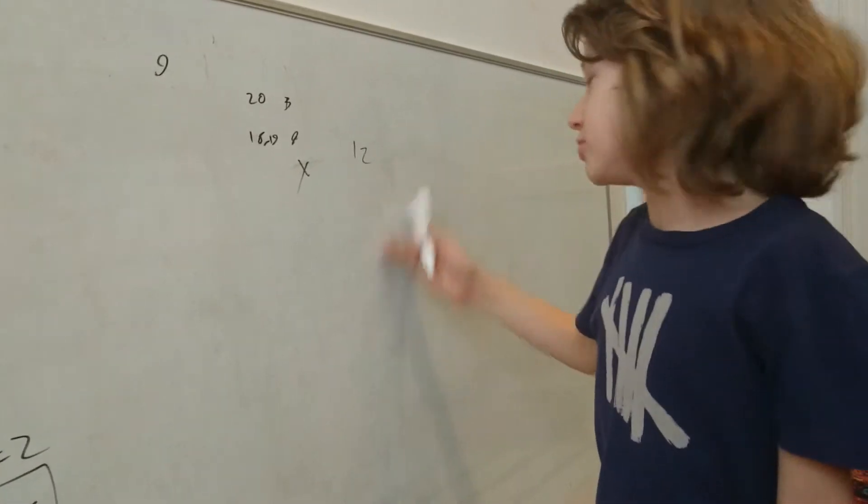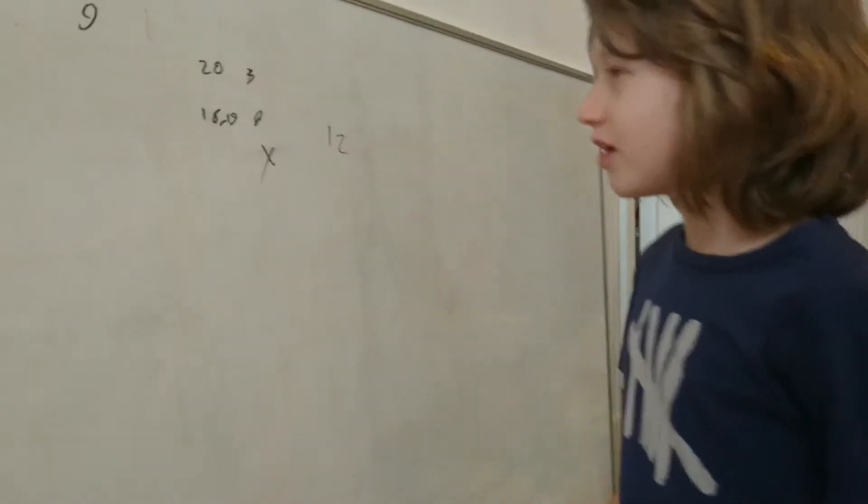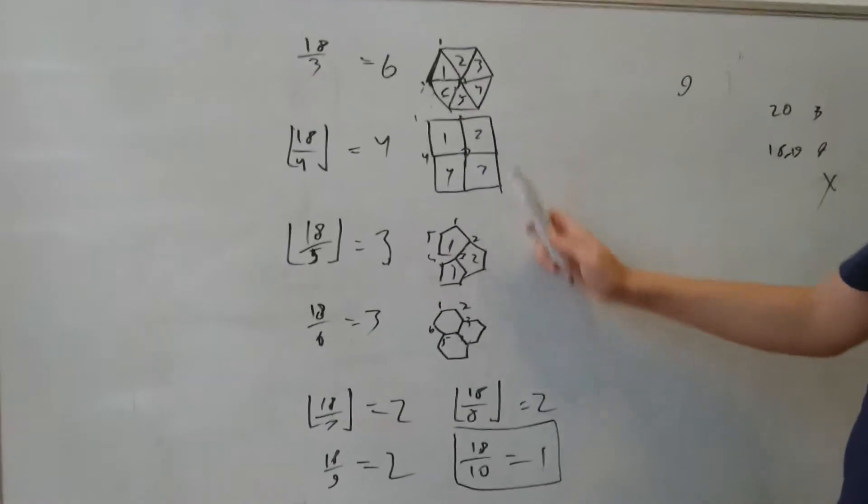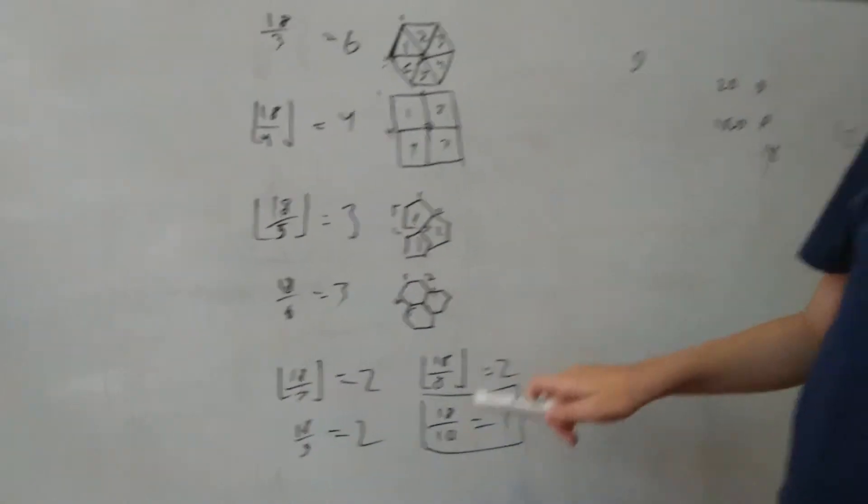Another arbitrary number pops up. Okay. So. Right? Six. Yeah. Fit around a point. Four fit around a point. Three fit around a point. Three fit around a point.